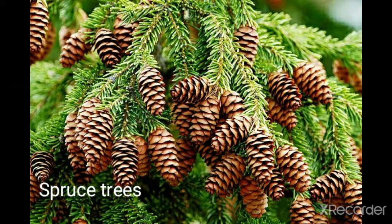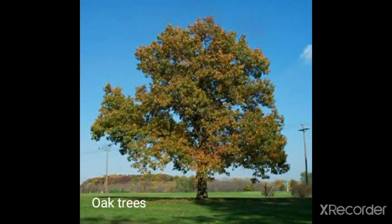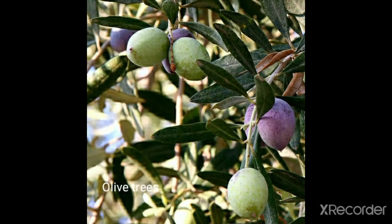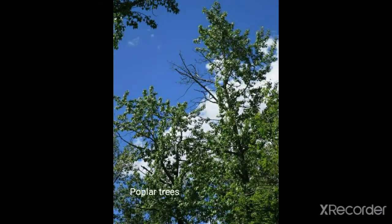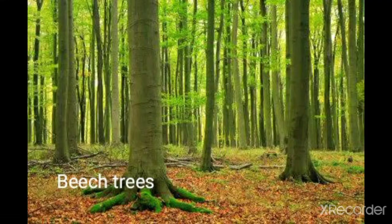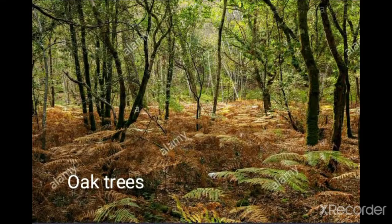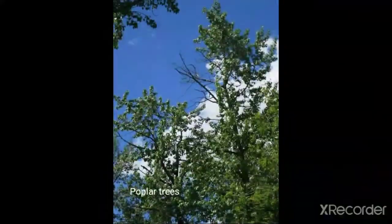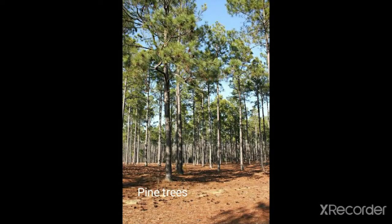The main trees found in temperate forests are oak, ash, beech, poplar, elm, and pine. I'll show you pictures because it's always better to remember things visually. Here is the oak tree — this is how an oak tree looks. This is ash tree. This is poplar tree. This is beech.